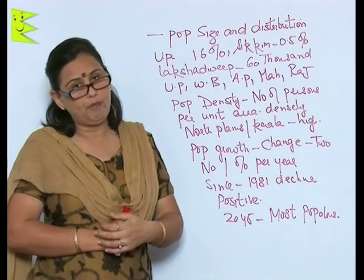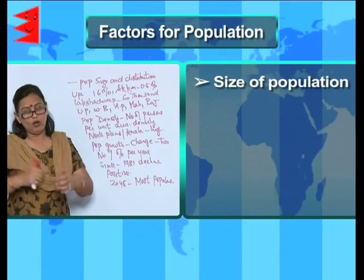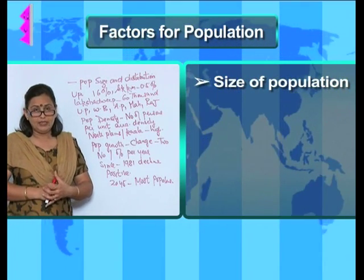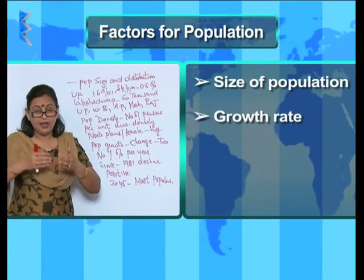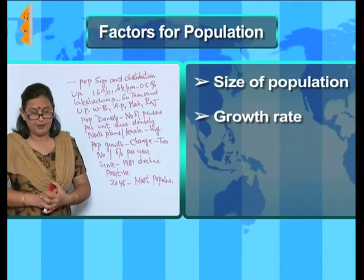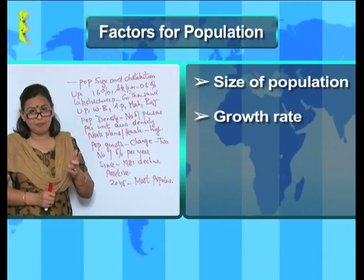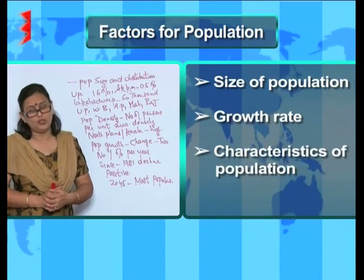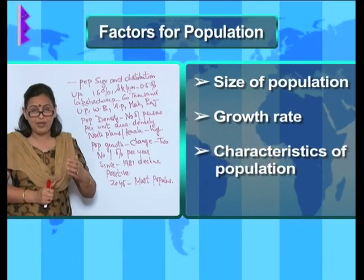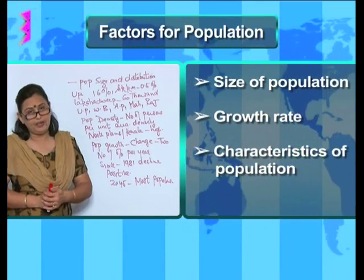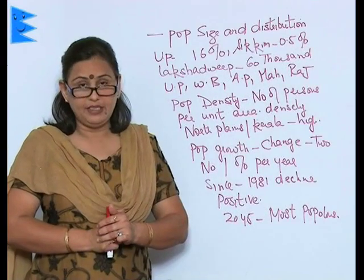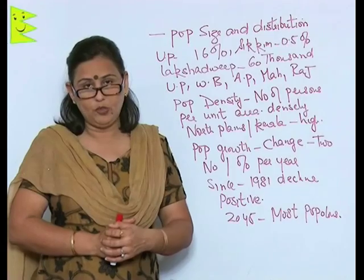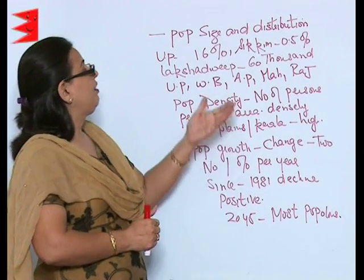When we talk about population, there are three major factors one must know. The first is the size of the population — how many people are there in a country. The second is the growth rate — at what pace is the population growing. And the third is the characteristics of the population — how many fall under the productive and unproductive population.